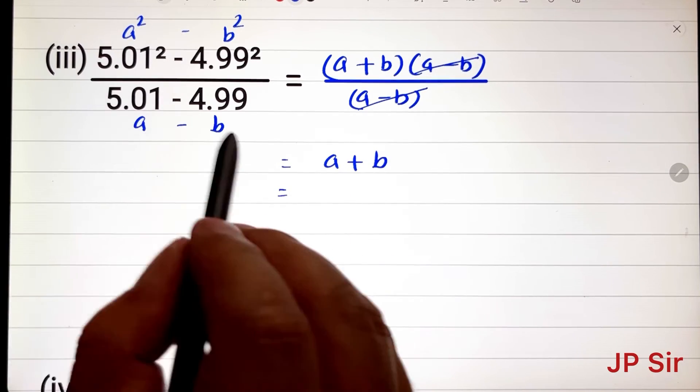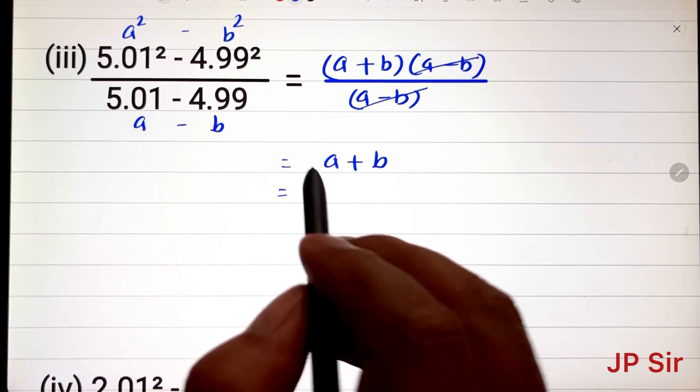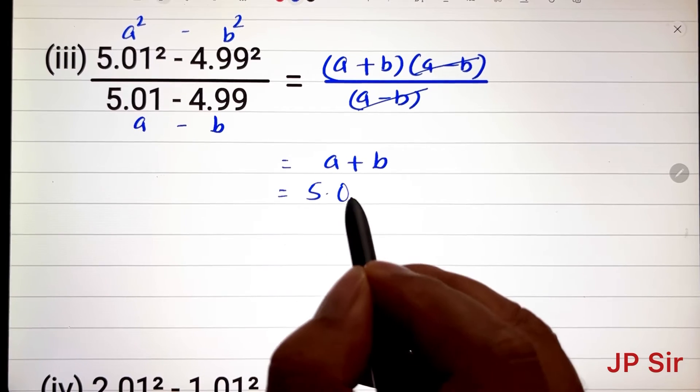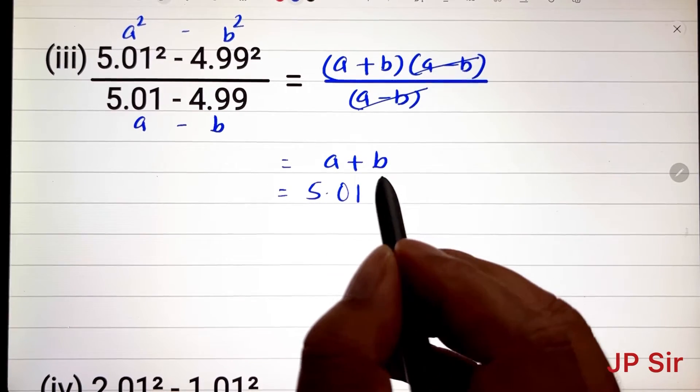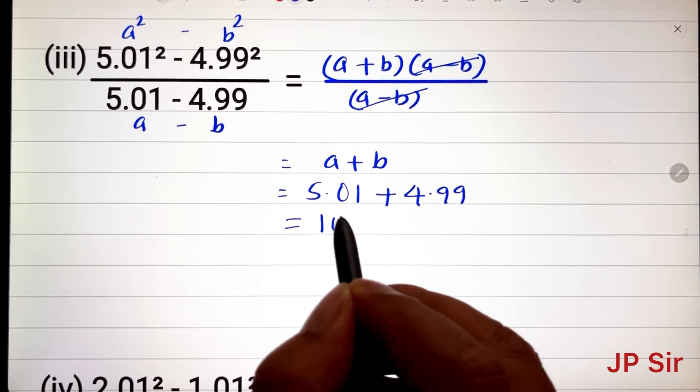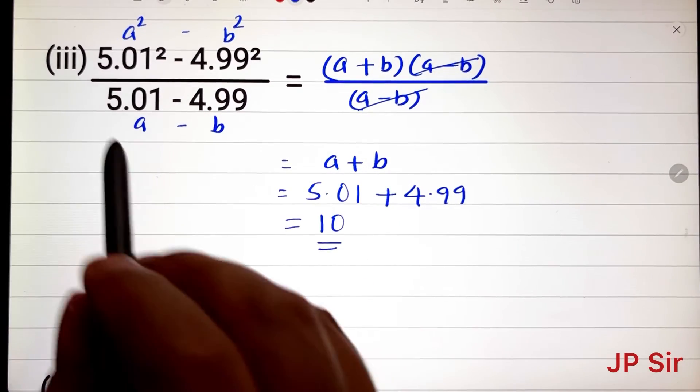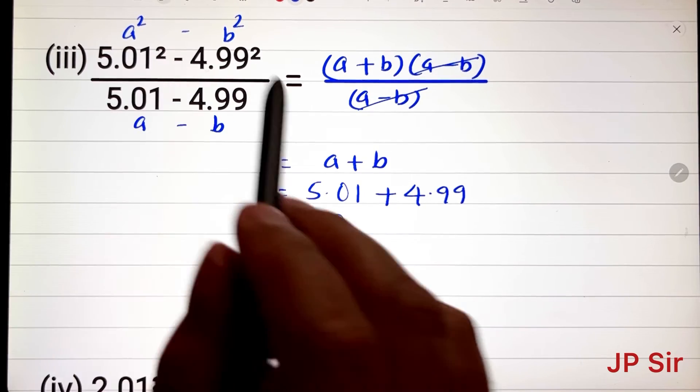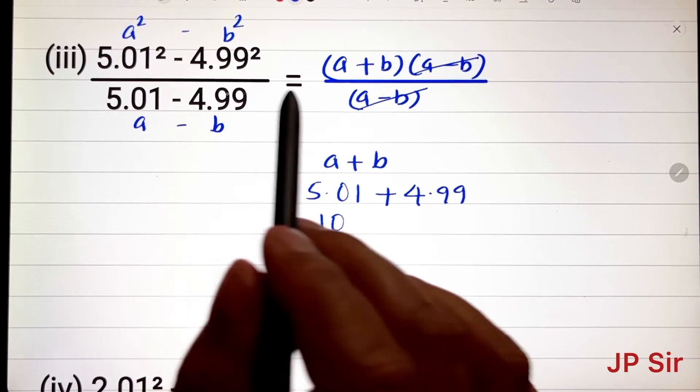So we can cancel this off and now we have just a + b. What was a? a is 5.01 and b is 4.99. So the answer is 10. So using this identity, we can simplify these expressions.